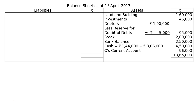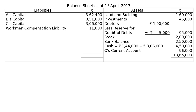Liability side: A's capital Rs. 3,62,400; B's capital Rs. 3,51,600; C's capital Rs. 3,65,000; workmen compensation liability Rs. 11,000; employees' provident bond Rs. 34,000; C's loan account Rs. 3,00,000. Total is Rs. 13,65,000, and this is the correct balance sheet — the answer is also correct.